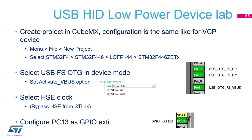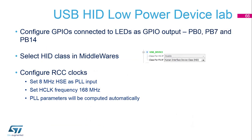Activate the OTG full speed with the VBUS option, which will be discussed later — this also involves PA9 usage. As you already passed through the hardware section, there are described obstacles with PA9 usage, so if you are not aware, please take a look there. As standard, we also use the high speed external oscillator. We use PC13 as the GPIO for remote wake-up, configure LEDs, and use the HID class for the mouse, which is quite common to use with low power and remote wake-up.